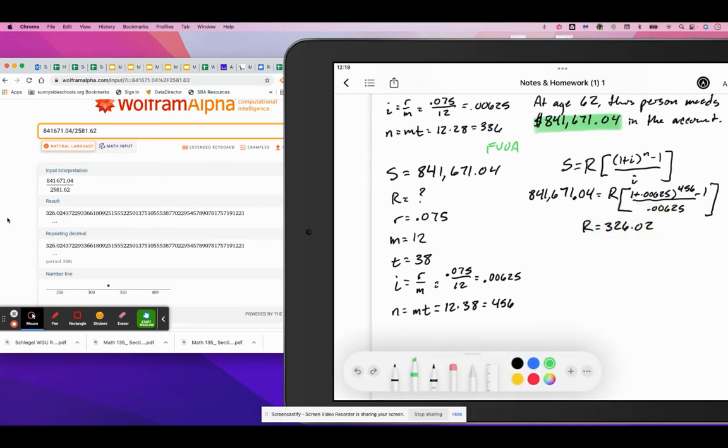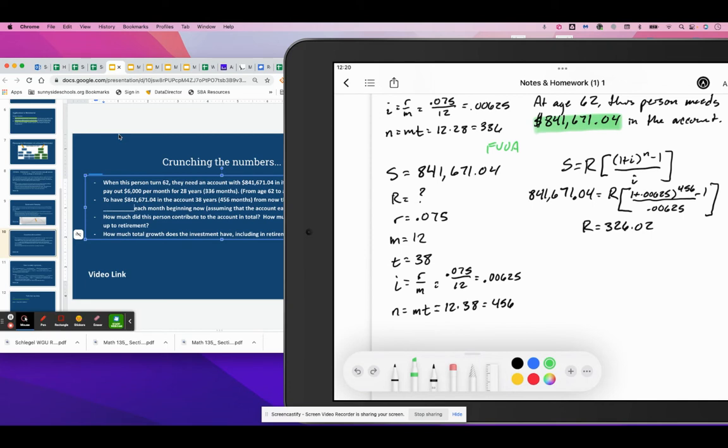So time is fertilizer for money. And if you're trying to build wealth for retirement, the key to that is to start when you are as young as possible. So we know that we are going to need to be putting away $326.02 each month in order for this person to reach their goal.